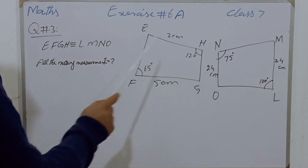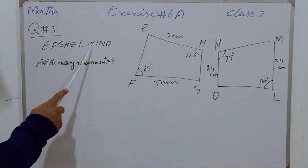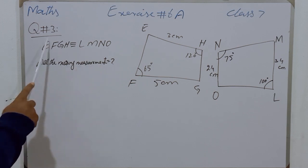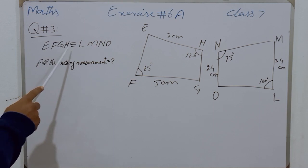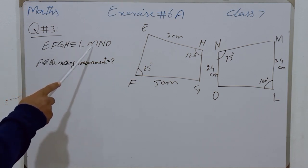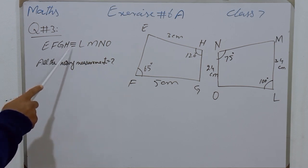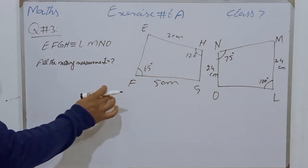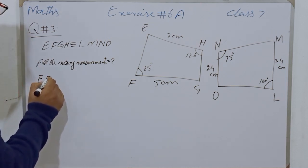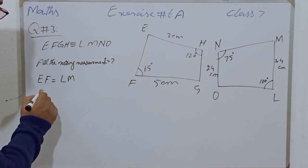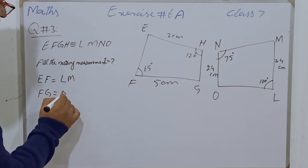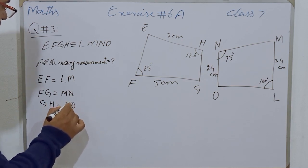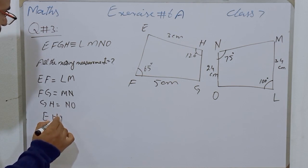Students, if these two figures are congruent, then side EF will be the corresponding side of LM, FG will correspond with NM, GH will correspond with NO, and EH is corresponding with LO. And Angle E is equal to Angle L, Angle F is equal to Angle M, Angle G is equal to Angle N, and Angle H is equal to Angle O.